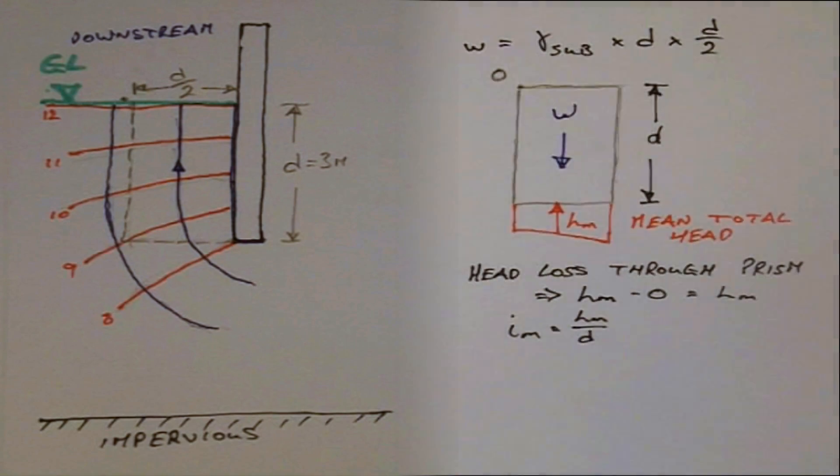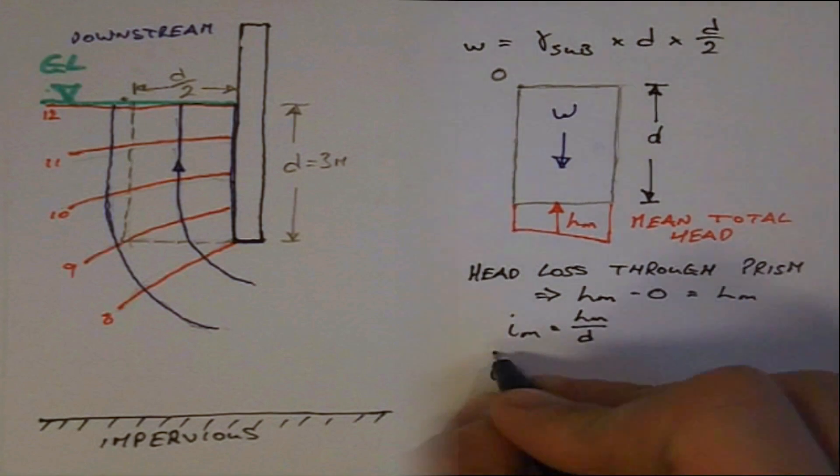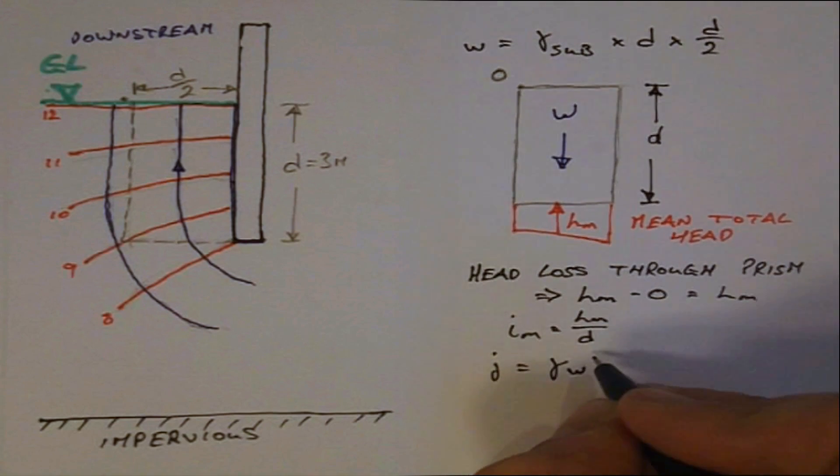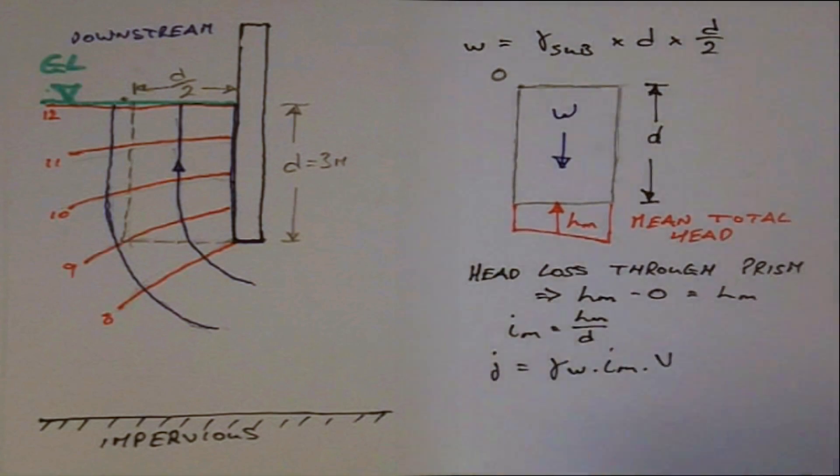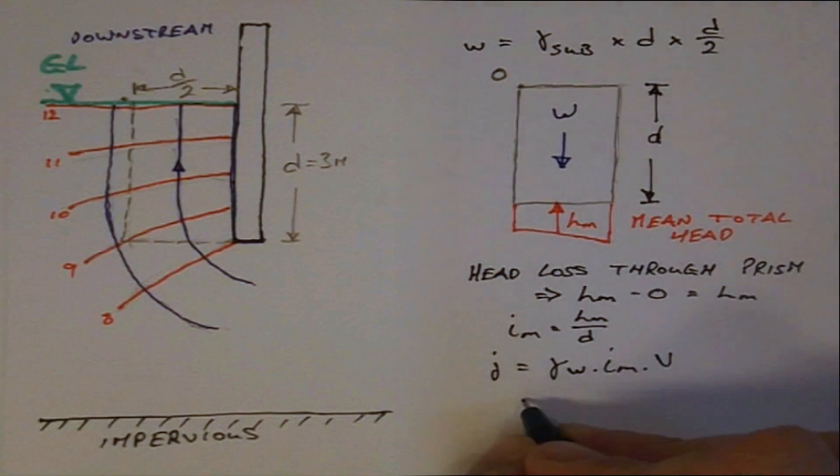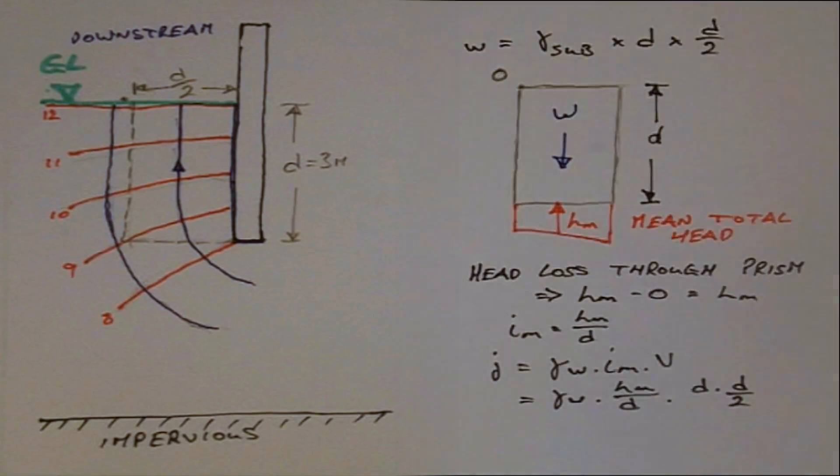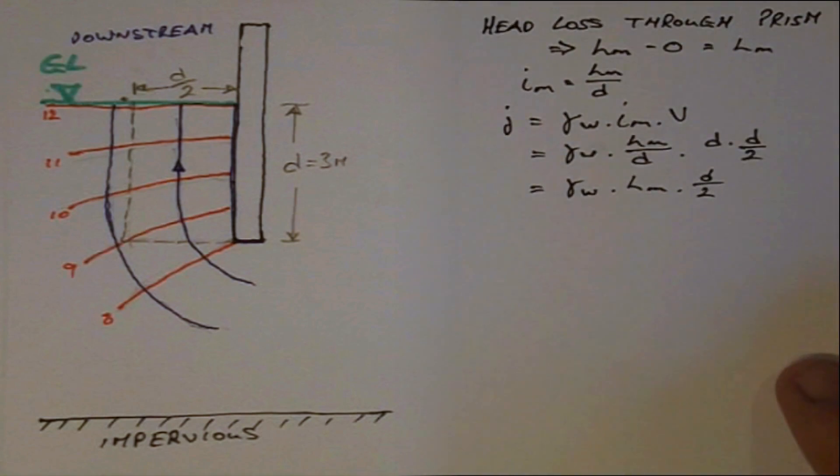From this we can calculate the mean hydraulic gradient by dividing H mean by D. Therefore the seepage force on the prism J is equal to the unit weight of water times I mean times V, which is equal to the unit weight of water multiplied by H mean divided by D, all multiplied by D times D over 2, which can be simplified.